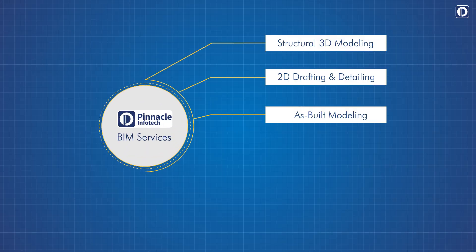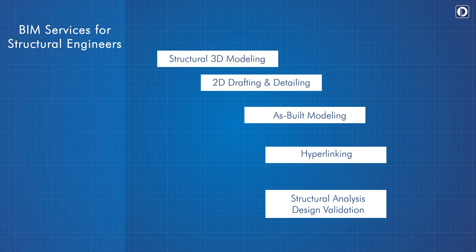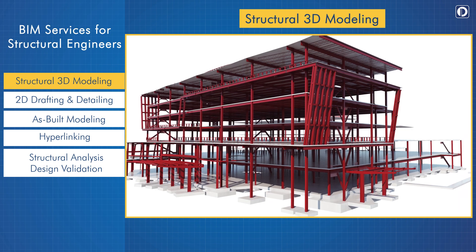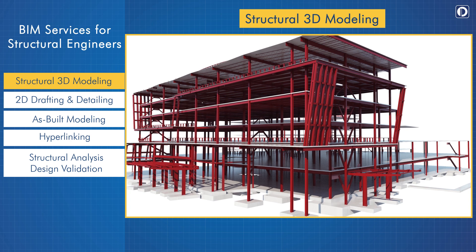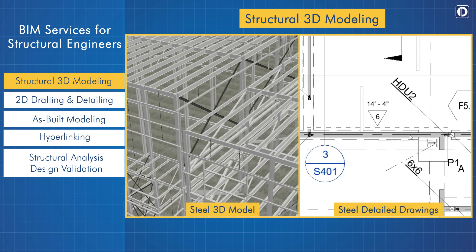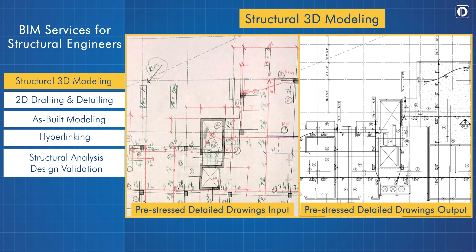Our BIM services for structural engineers include structural 3D modeling, 2D drawing drafting and detailing, as-built modeling, hyperlinking, structural analysis, and design validation. We generate accurate 3D models and detailed drawings for concrete, wood, steel, and pre-stressed and post-tension structures.